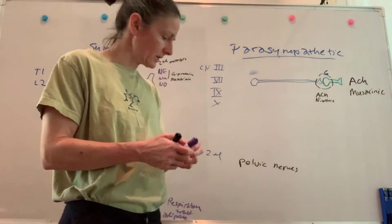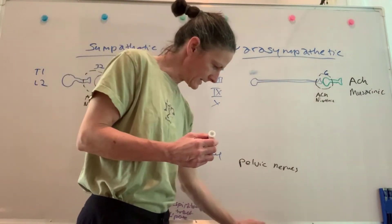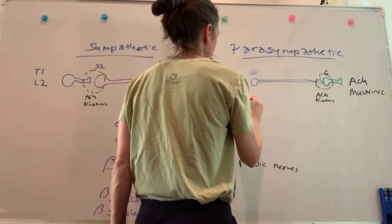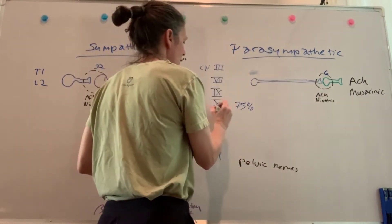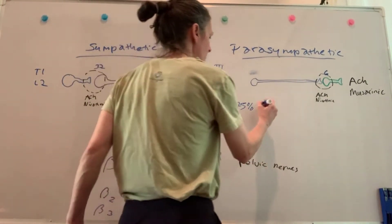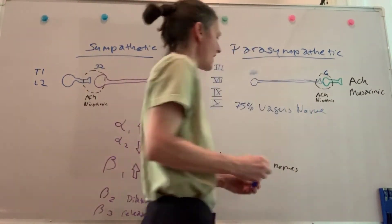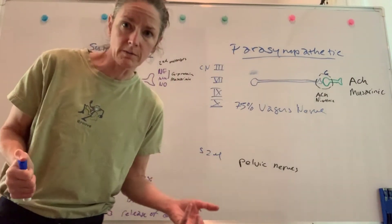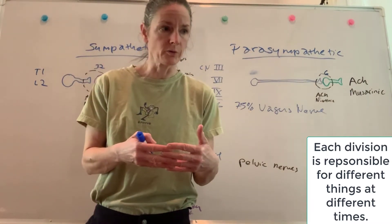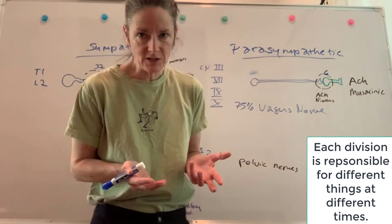Notably, over 75% of parasympathetic outflow occurs over cranial nerve 10, the vagus nerve. So the vagus nerve accounts for about 75% of our parasympathetic outflow — quite important. This is especially relevant for cardiac, respiratory, and digestive function.